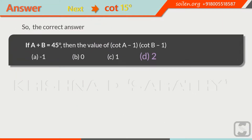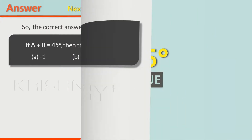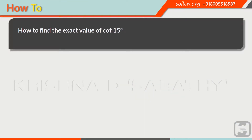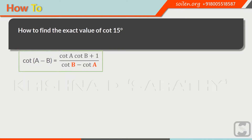Next, we will find the exact value of cotangent of 15 degrees. There are many ways we can do this. Here we will use the difference formula: cotangent of a minus b equals cotangent a times cotangent b plus 1, over cotangent b minus cotangent a. Always remember, here b comes first and a in the second place — it's very important.